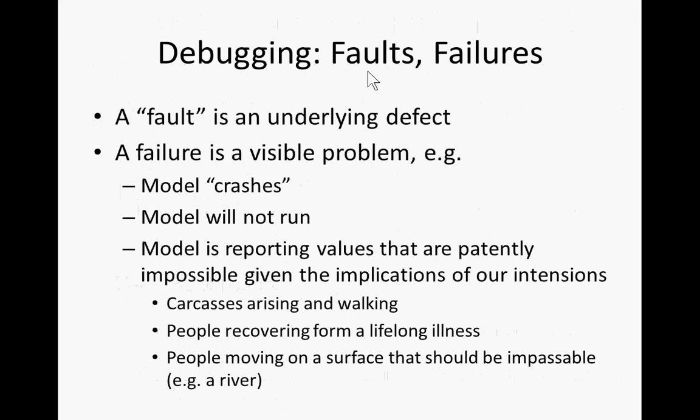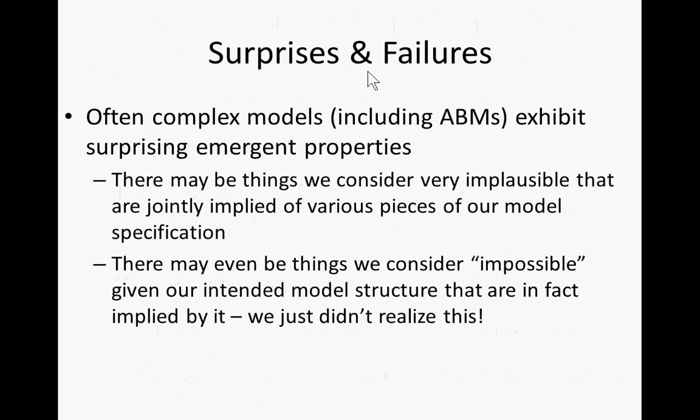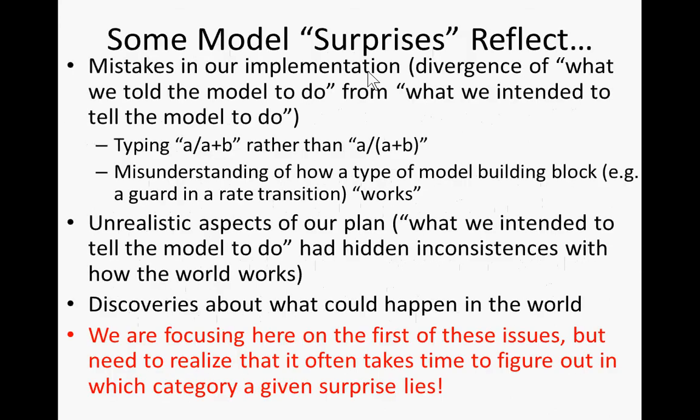We speak about a distinction in software between faults and failures. A fault is some underlying defect, and a failure is a visible problem that helps manifest that defect. Some of the worst faults are those that don't have any obvious failures associated with them. Complex models often exhibit surprising emergent properties, and trying to distinguish those from bugs is quite challenging. There may be things that seem impossible on the face of it but actually turn out to be natural outcomes of our model assumptions, and perhaps they tell us things about the world we didn't know.